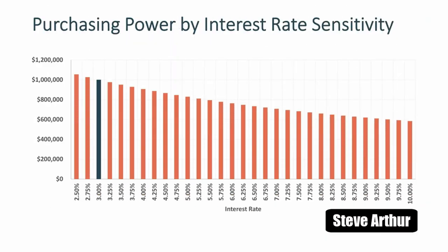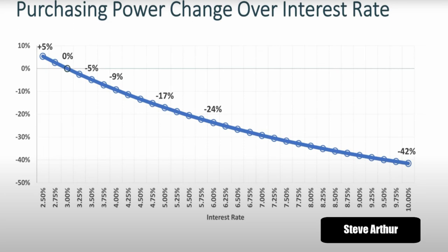Graphing the interest rates and total purchasing power, we can see that purchasing power increases when rates drop and decreases when rates increase. Plotting the purchasing power percentage change over interest rates, starting with 3% as our baseline at 0%, when rates decrease we have a gain, and when rates increase we have a loss. At an extreme scenario of 10% interest rate, purchasing power dropped by over 40%. So hopefully you can see through all these numbers that just the smallest change in interest rate can badly affect your affordability, your purchasing power, and your decision to make a home purchase.